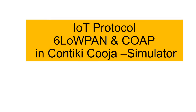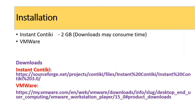To start with IoT protocols 6LoWPAN and CoAP in the Contiki Cooja simulator, first install Contiki OS and then install VMware. The installation takes a little time because Contiki requires 2 GB of data. To download Contiki OS, search for Contiki OS on SourceForge and start downloading. Meanwhile, open VMware downloads and download the VMware installer from there as well.